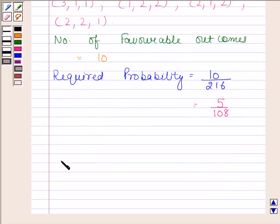The probability of getting a total of 5 is 1 by 36 and probability of getting a total of at most 5 is 5 by 108. These are our required answers. So this completes our session. Bye and take care.